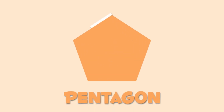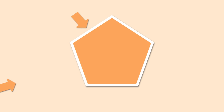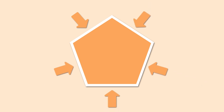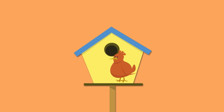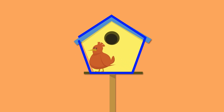This one right here is a pentagon. Pentagons have five sides — one, two, three, four, and five. A pentagon looks like this birdhouse, or like these football stitches.